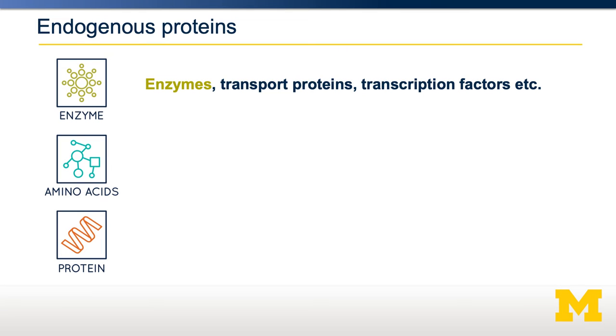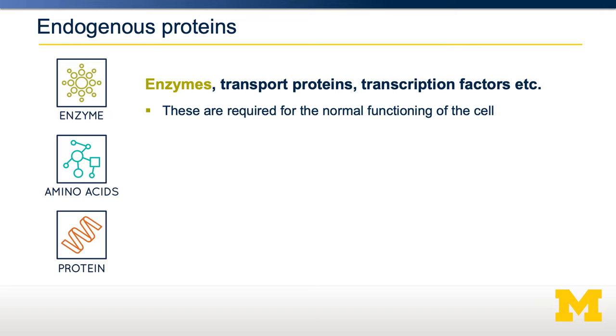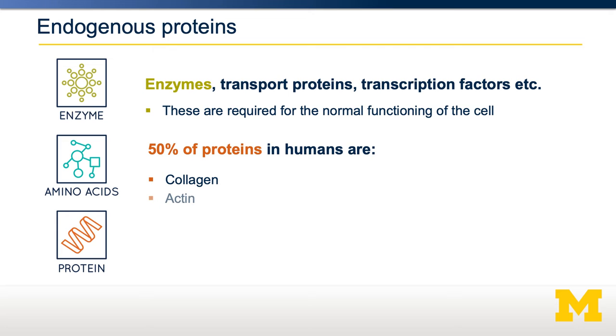Within our bodies, proteins play a large variety of roles. They could be enzymes, membrane transporters, or transcription factors. These are all important for the normal function of the cell. In fact, most of the functional things that our bodies and cells can do are done by proteins. However, even though there are tens of thousands of different proteins, almost 50% of all the proteins in your body are just four proteins: collagen, actin, myosin, and albumin.